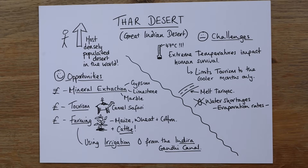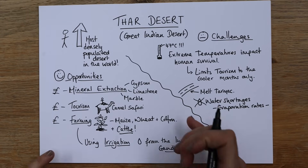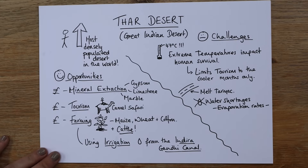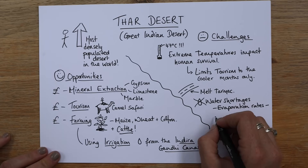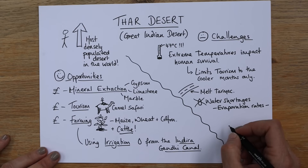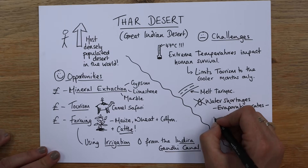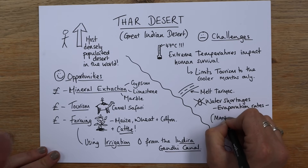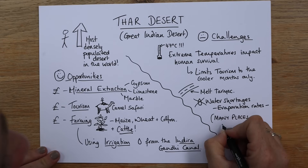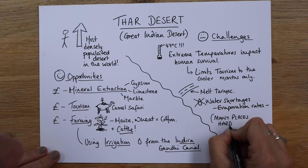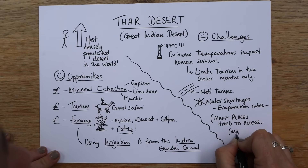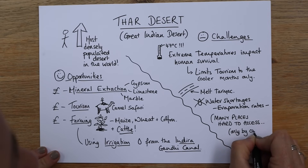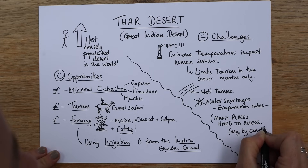Another challenge is the lack of accessibility. If you think about the sand, it's very difficult to cross — you need roads. If the tarmac's melting, roads are difficult to use. So there's a lack of access, which can mean places are only really accessible by camel. Many places become hard to access, or accessible only by camel.